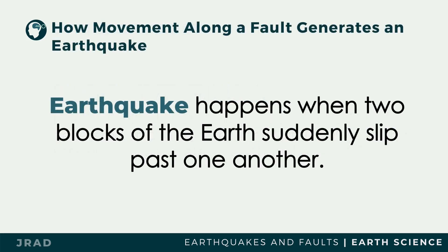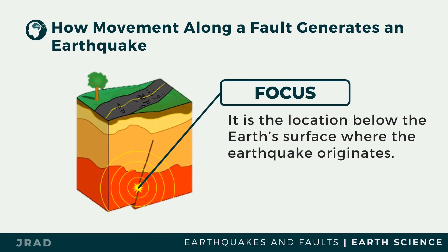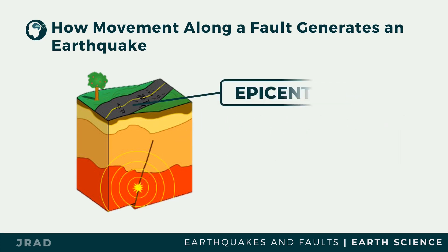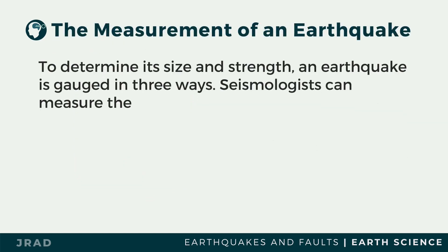An earthquake happens when two blocks of earth suddenly slip past one another. At the fault, the location where an elastic rebound occurs is called the focus of the earthquake — it is the location below the Earth's surface where the earthquake originates, also called the hypocenter. The spot on the surface directly above the focus is called the epicenter. When a fault snaps, a very large amount of energy is released from the focus and transmitted as waves through the lithosphere.